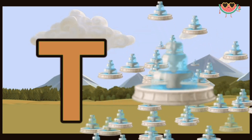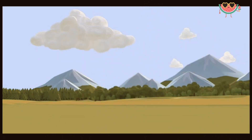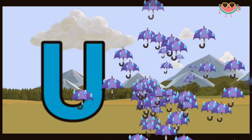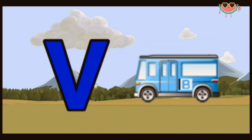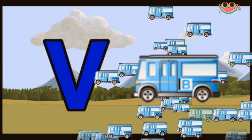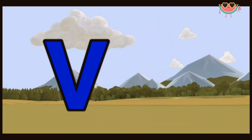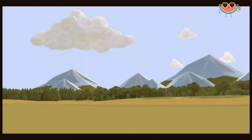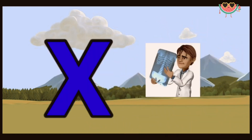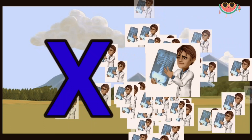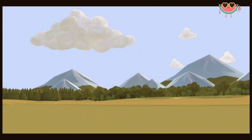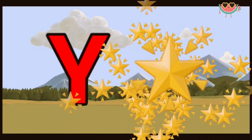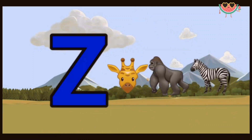tap. U for umbrella. B for one. W for wallet. X for x-ray. Y for yellow. Z for two. W for